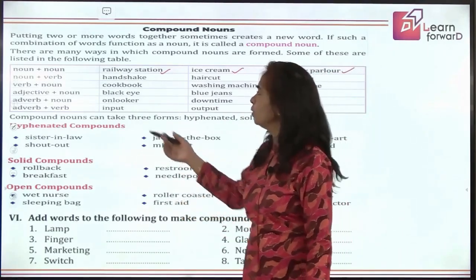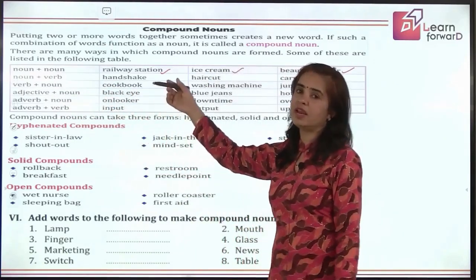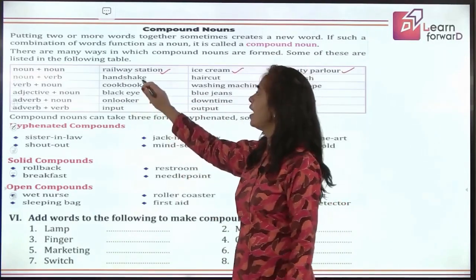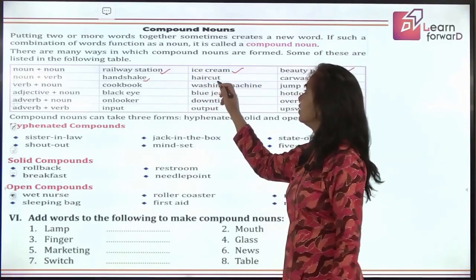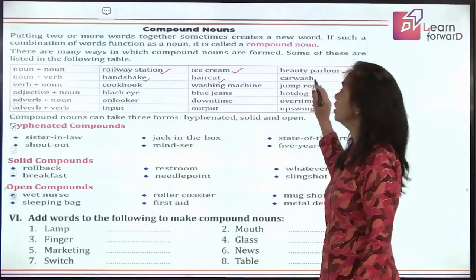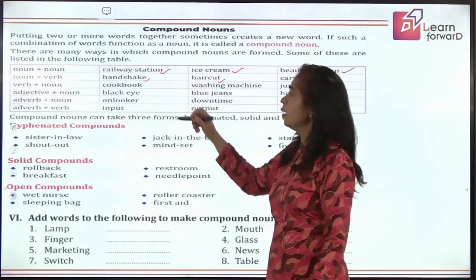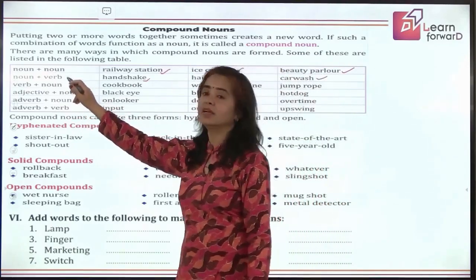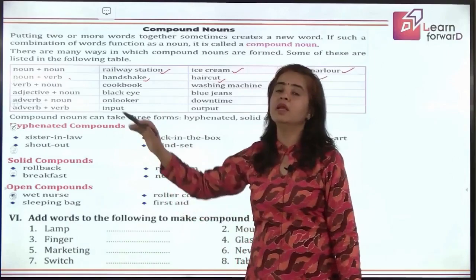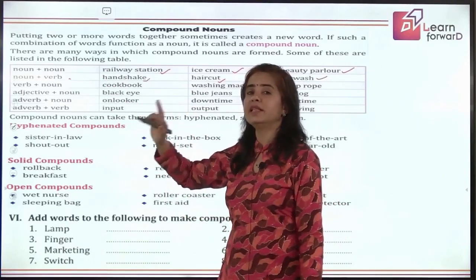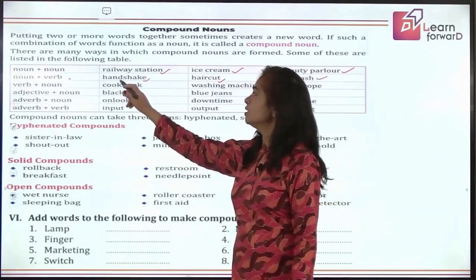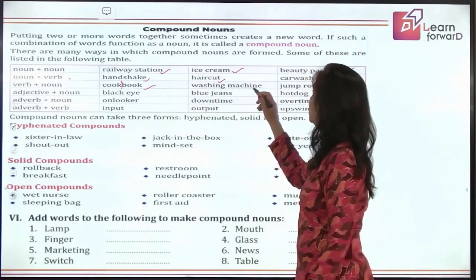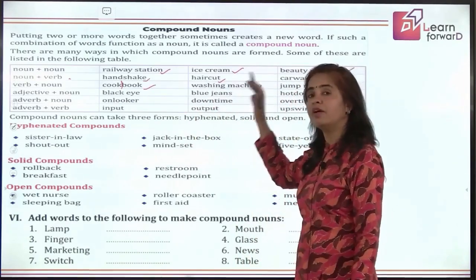From noun and verb we can also have compound nouns: 'hand' is a body part and 'shake' is an action — so it becomes 'handshake'. 'Hair' and 'cut' give 'haircut'. 'Car' and 'wash' give 'carwash'. Coming to verb plus noun: here we put the verb first. So 'cook' is a verb and 'book' is a noun — it becomes 'cookbook'. 'Washing machine', 'jump rope' — verb followed by noun is another form of compound nouns.